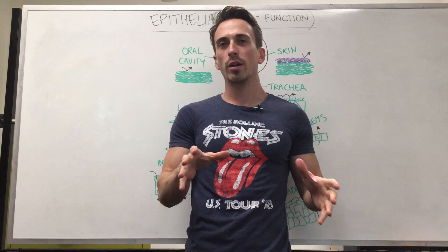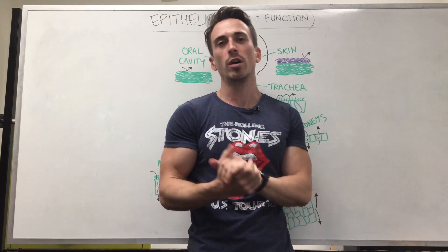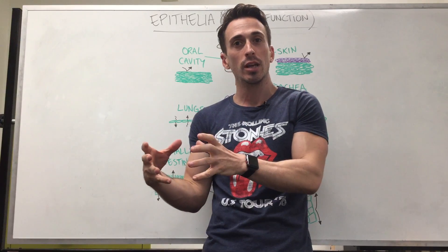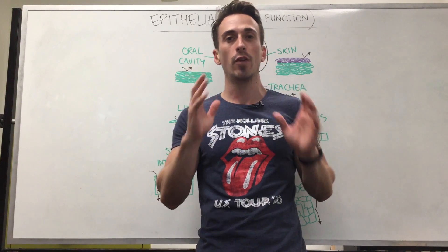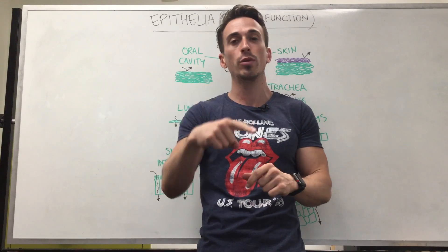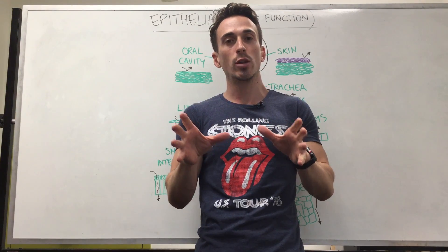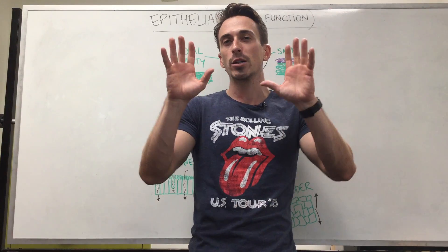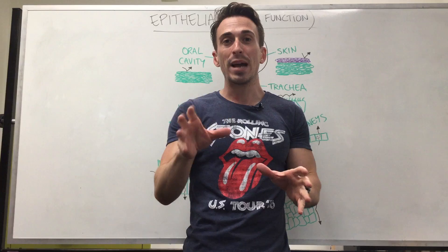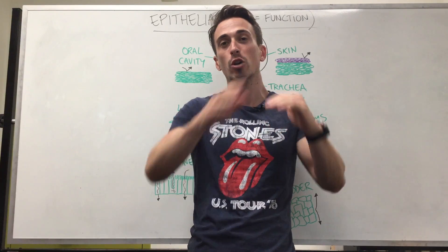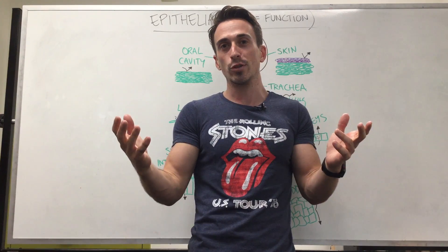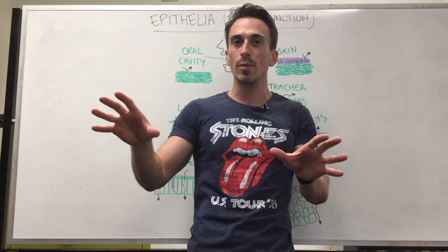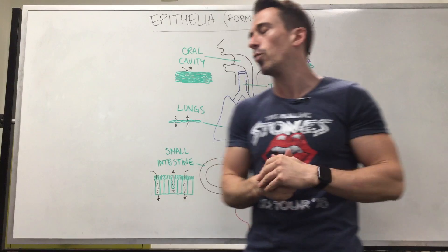Hi everyone, Dr. Mike here. In this video we're going to focus on one of the four tissue types of the body that we call epithelia. Epithelia's function is to form boundaries between environments. Sometimes we want things to pass through these boundaries, sometimes only certain things, sometimes nothing at all. Other times these boundaries may facilitate movement across the surface. So epithelia forms boundaries in a number of different ways.